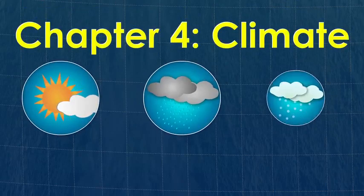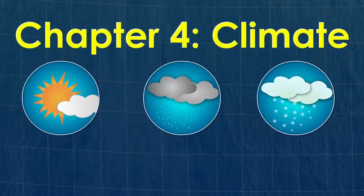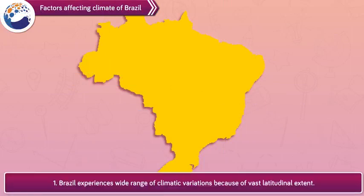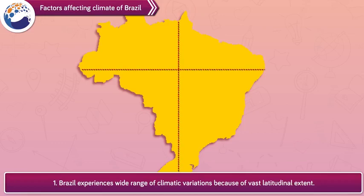Chapter 4: Climate. Let's discuss the factors affecting the climate of Brazil. Factor 1: Brazil experiences a wide range of climatic variations because of its vast latitudinal extent.